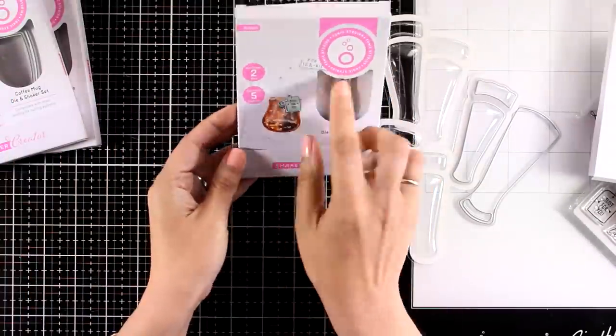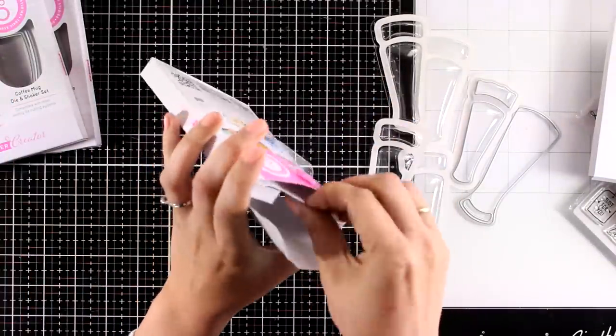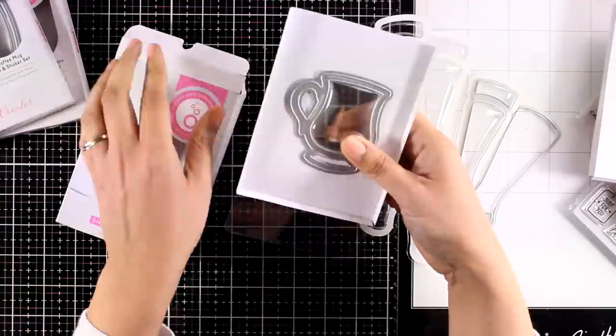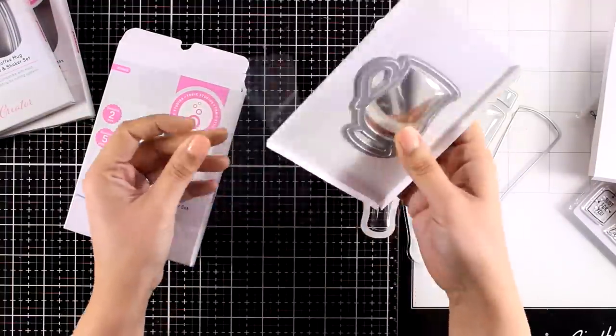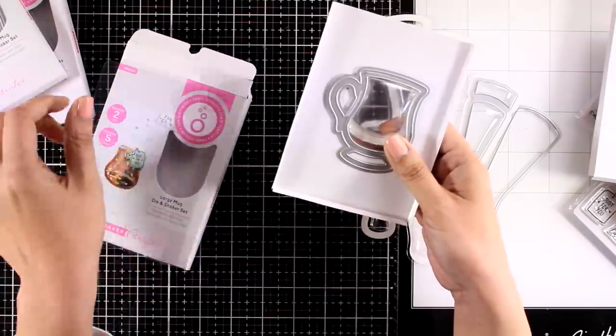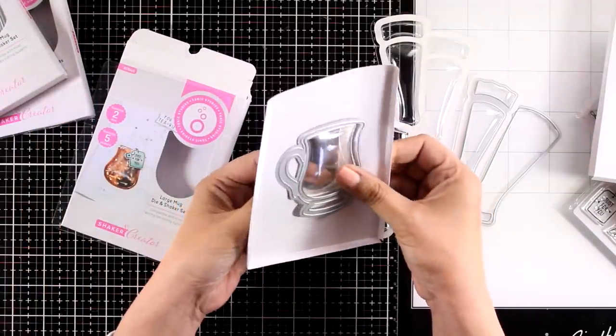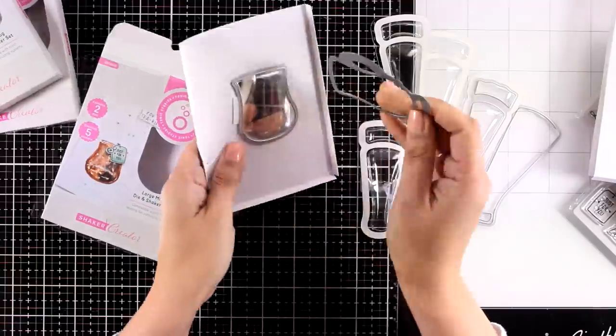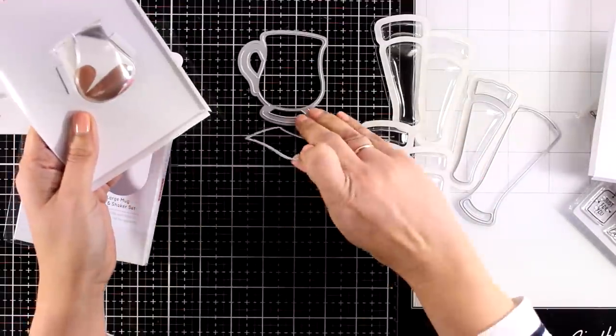So again every one of those packages come with two dies and five pouches that match the die and on the inside you will get this acetate. This is part of the packaging but I am going to hold on to it. I like to use these things. I recycle them and use them for my shaker cards.